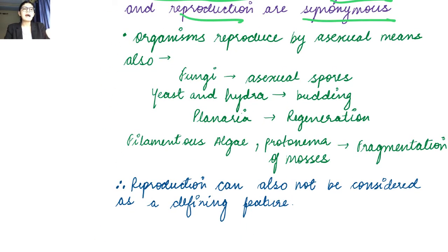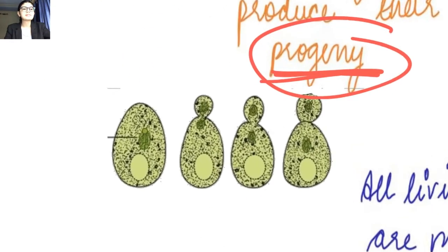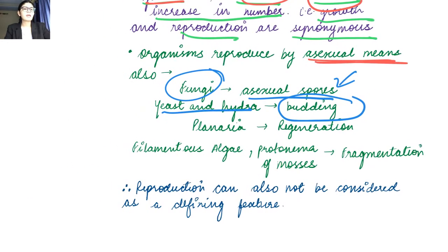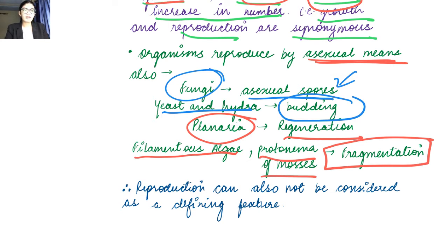There are some organisms that reproduce by asexual means. For example, fungi produce asexual spores. Yeast and hydra reproduce by budding. Planaria can regenerate. And filamentous algae and the protonema of mosses can undergo fragmentation.